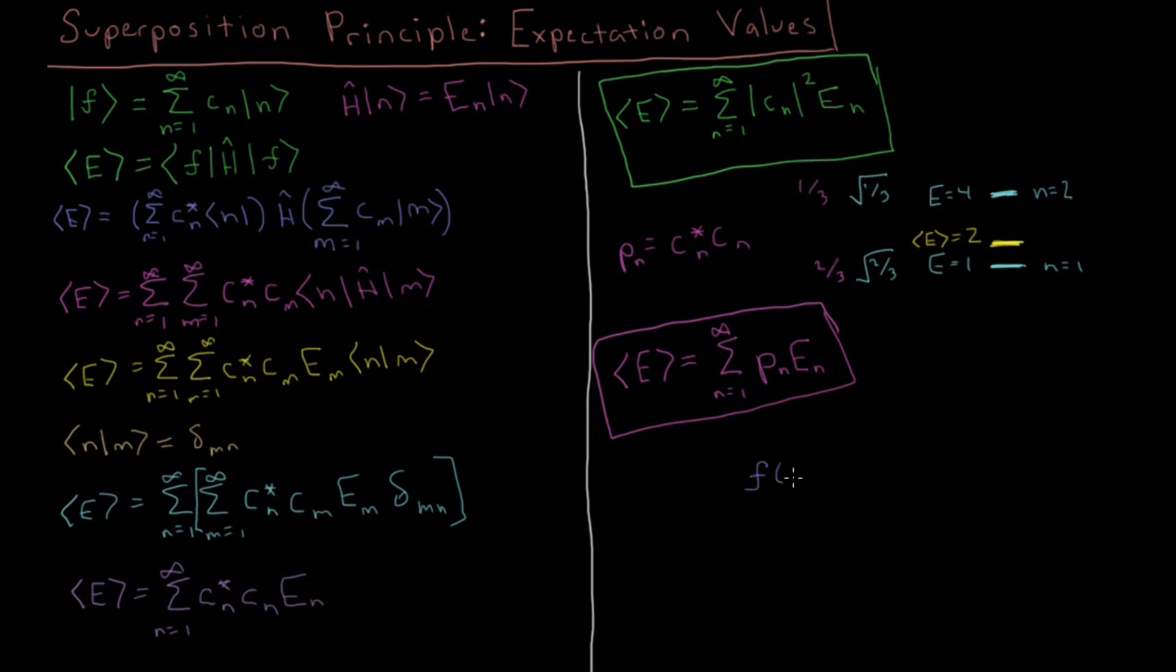So if I would just write down what this f of x would be, this f of x would be square root of 1 third psi 2 of x plus square root of 2 thirds psi 1 of x, where this psi 1 is for n equals 1 and psi 2 for n equals 2. So I'll make this a little bit more concrete in the next video and do a more specific example for the particle in a box, and we'll see what the consequences are for that model system.